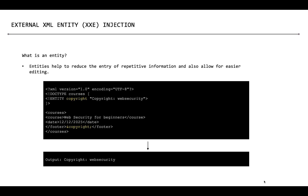Entities in XML are used to represent data. Instead of using actual data, we can simply use an entity to represent that data. For example, let's assume a scenario where you want to print a copyright message in multiple places in your document. Instead of repeating this actual text in multiple places, we can define an entity using the keyword entity and refer to the name of this entity whenever we want to use the data.